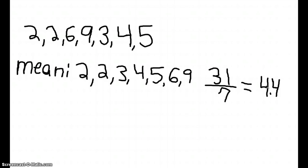That's how you find the mean of something. Now, I will show you how to find the median of numbers. Any kind of numbers. The median, you order them from the least to greatest. 2, 2, 3, 4, 5, 6, and 9.